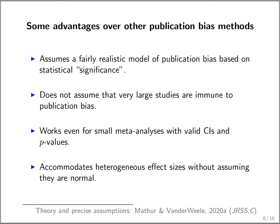The reason we wanted to add another publication bias method to the literature is to deal with a few disadvantages of existing methods. We assumed a fairly realistic, though still simple, model of publication bias in which publication selects for statistical significance. We also wanted methods that don't assume large studies are immune to publication bias, that work for small meta-analyses, and that accommodate heterogeneity without assuming normally distributed effect sizes.